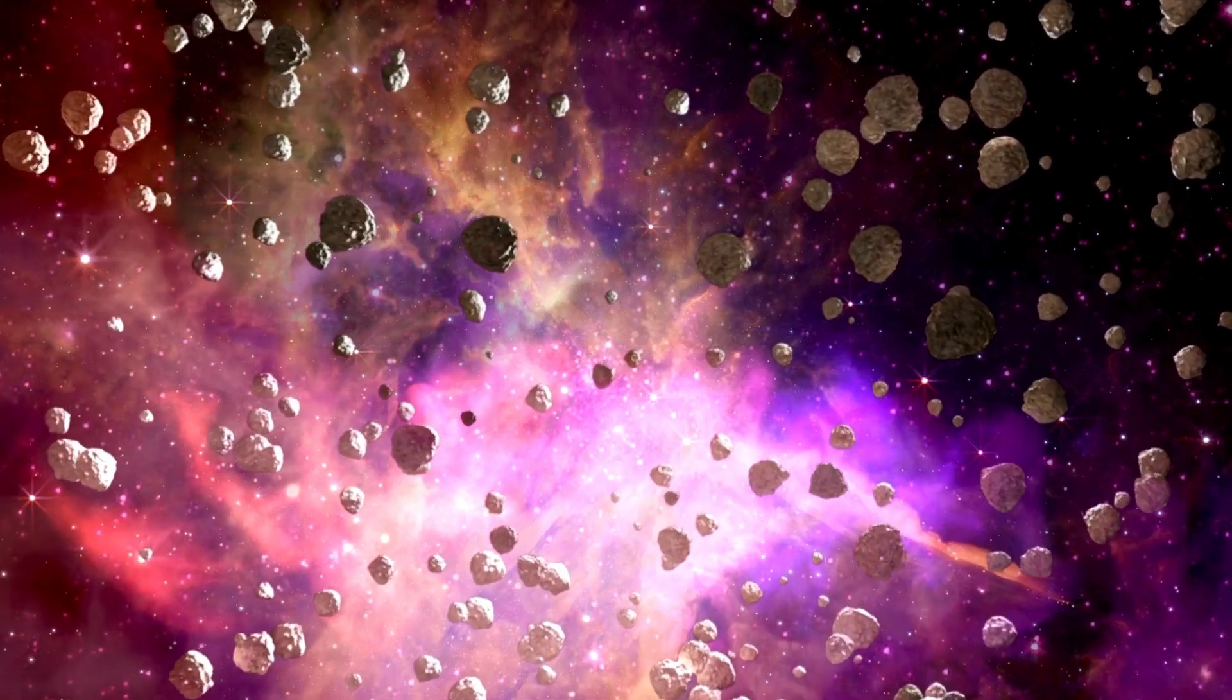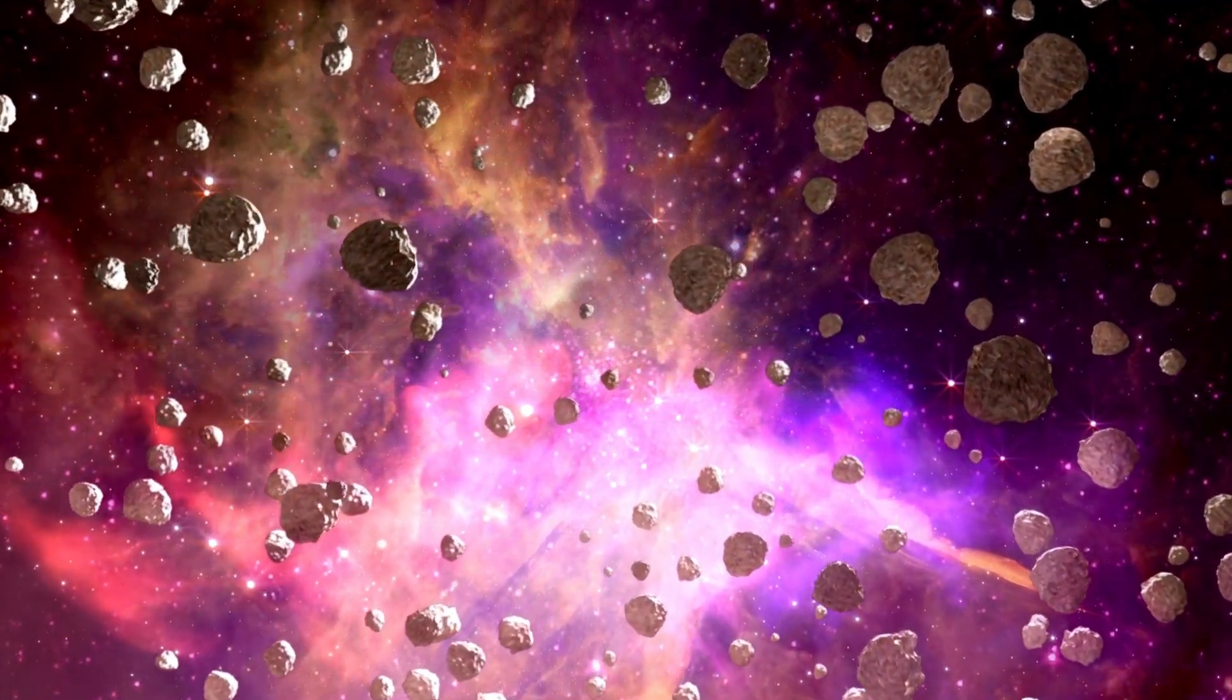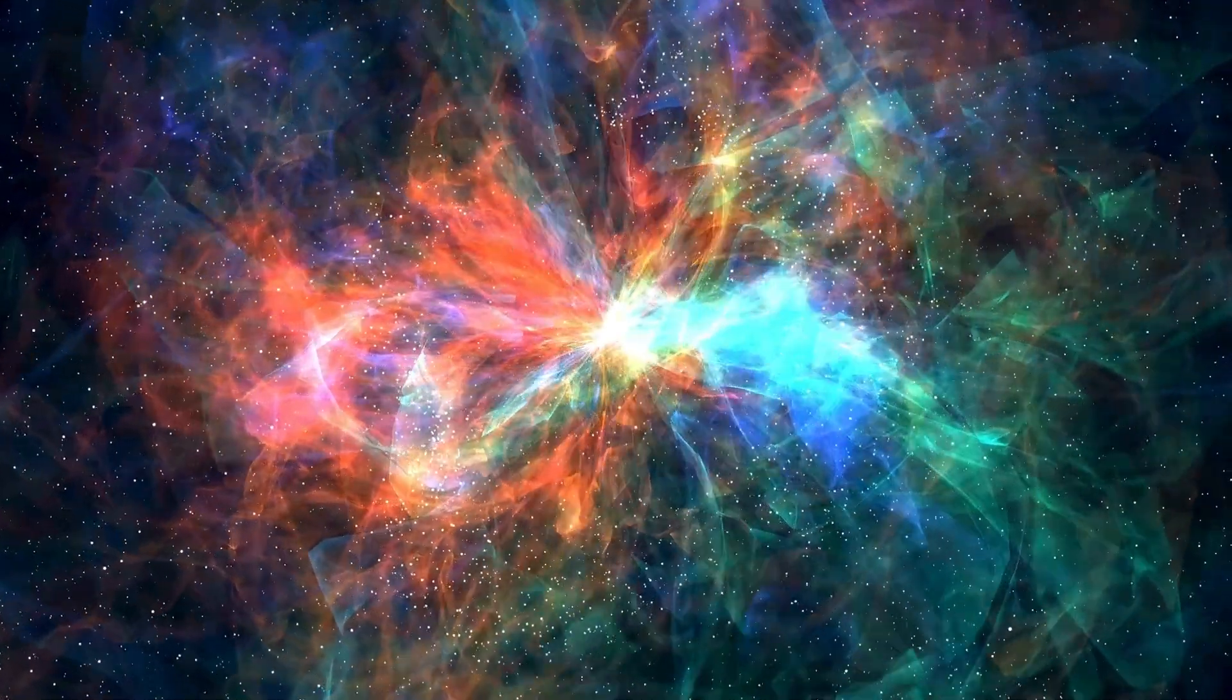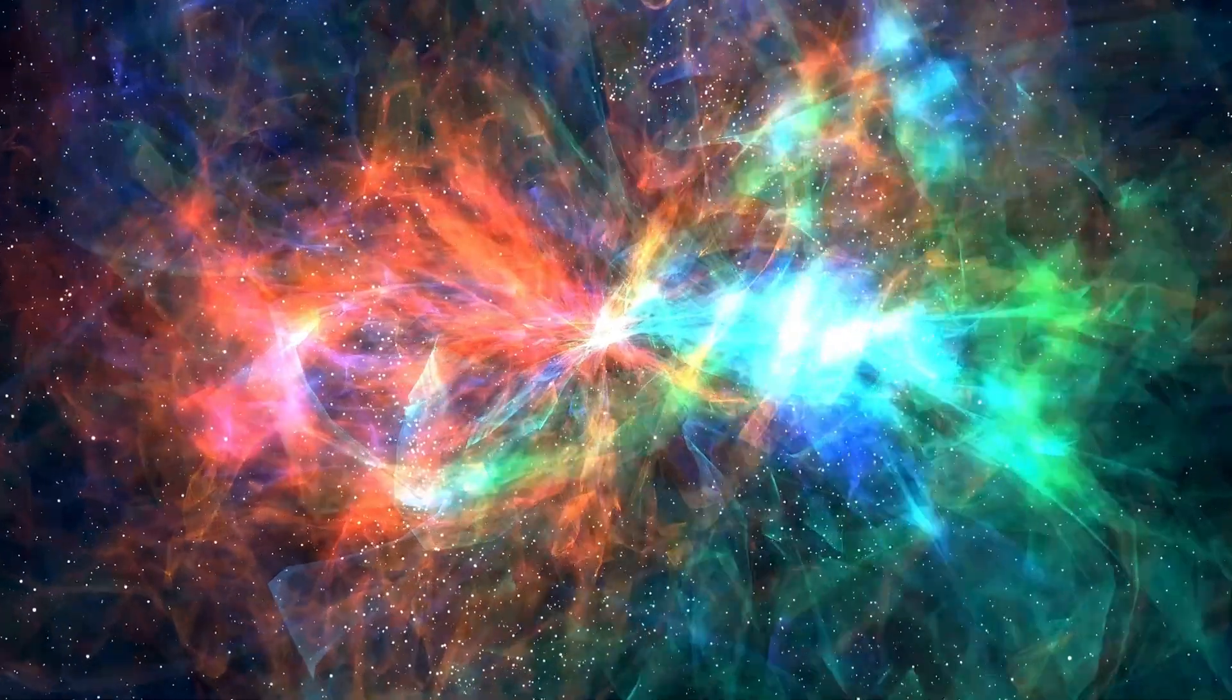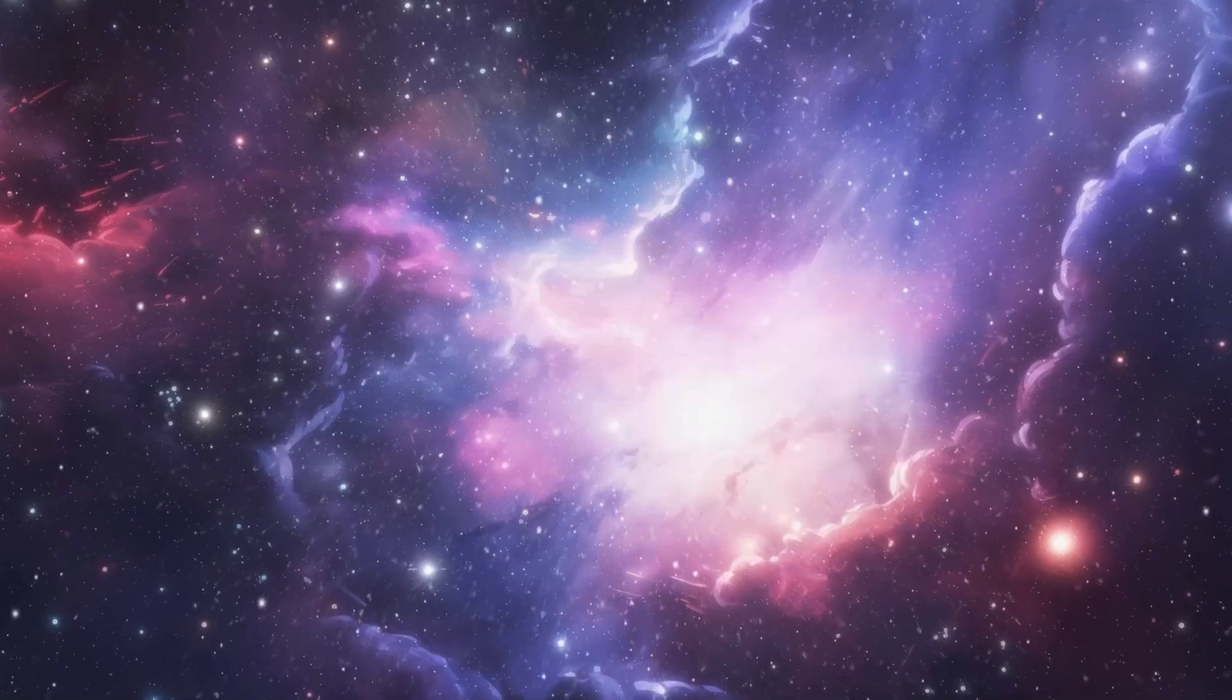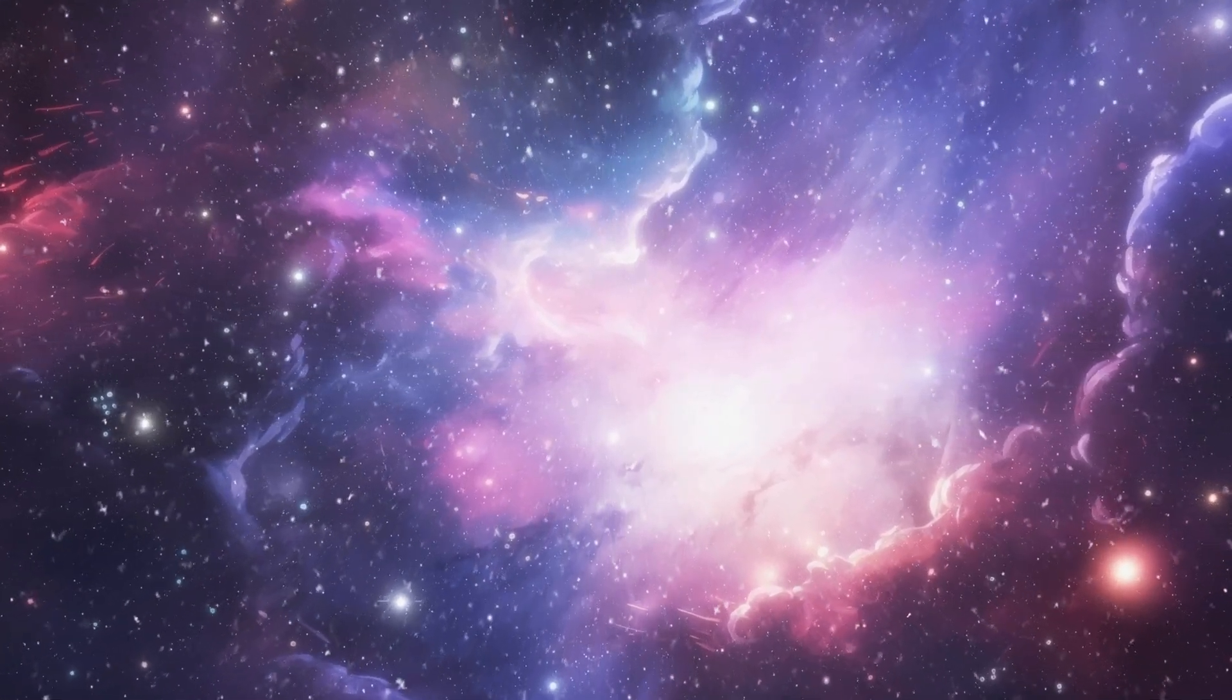Betelgeuse is a massive red supergiant that has led a fast and intense life. It is currently in the final stages of its accelerated evolution. Eventually, when it exhausts its fuel, the core will collapse under its enormous mass, leading to an explosion that could eclipse entire galaxies. This supernova is bound to happen, but like all the others, we wonder when it will happen.